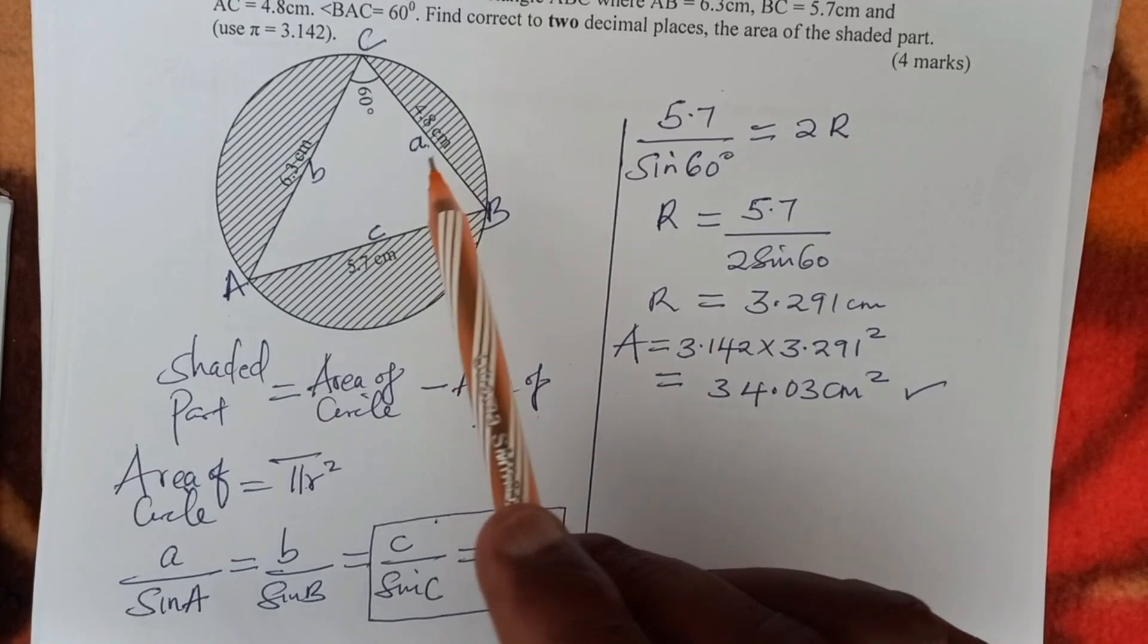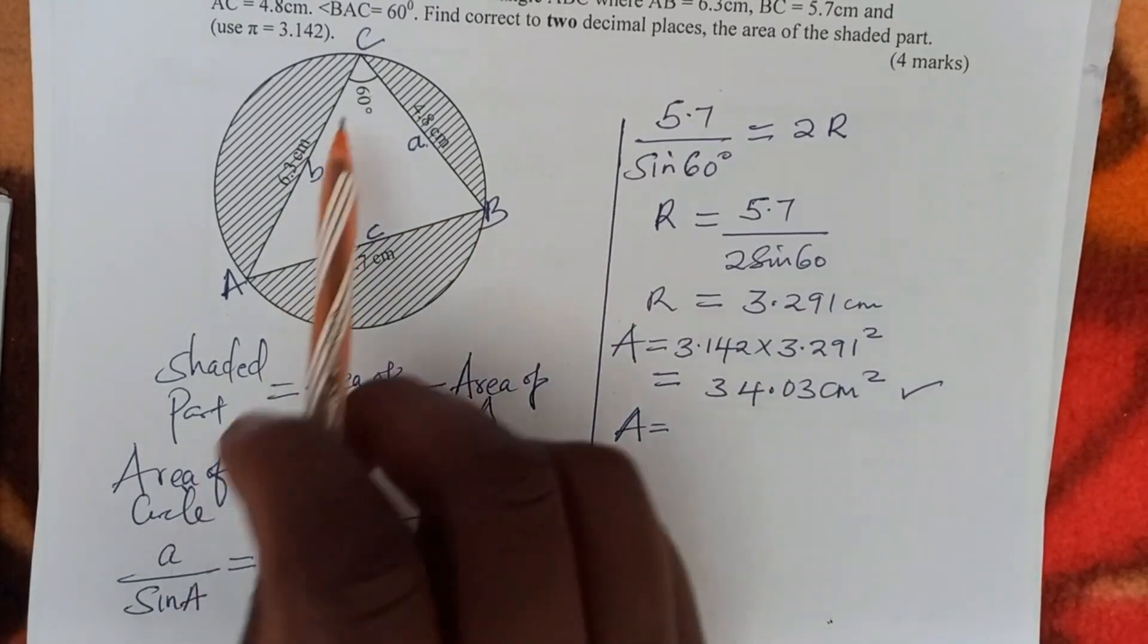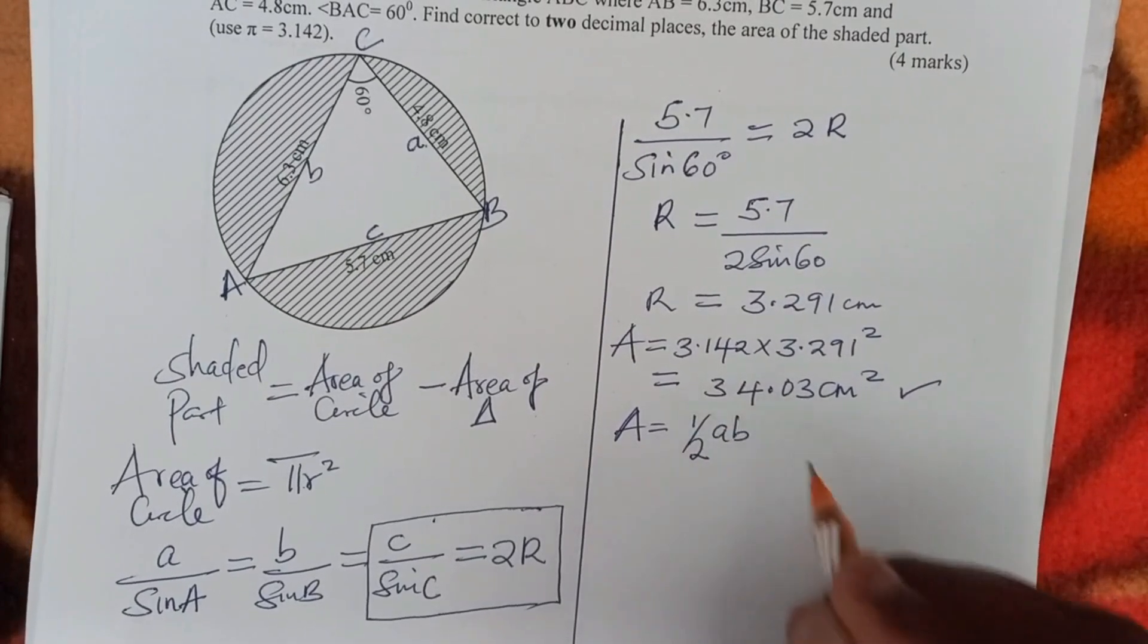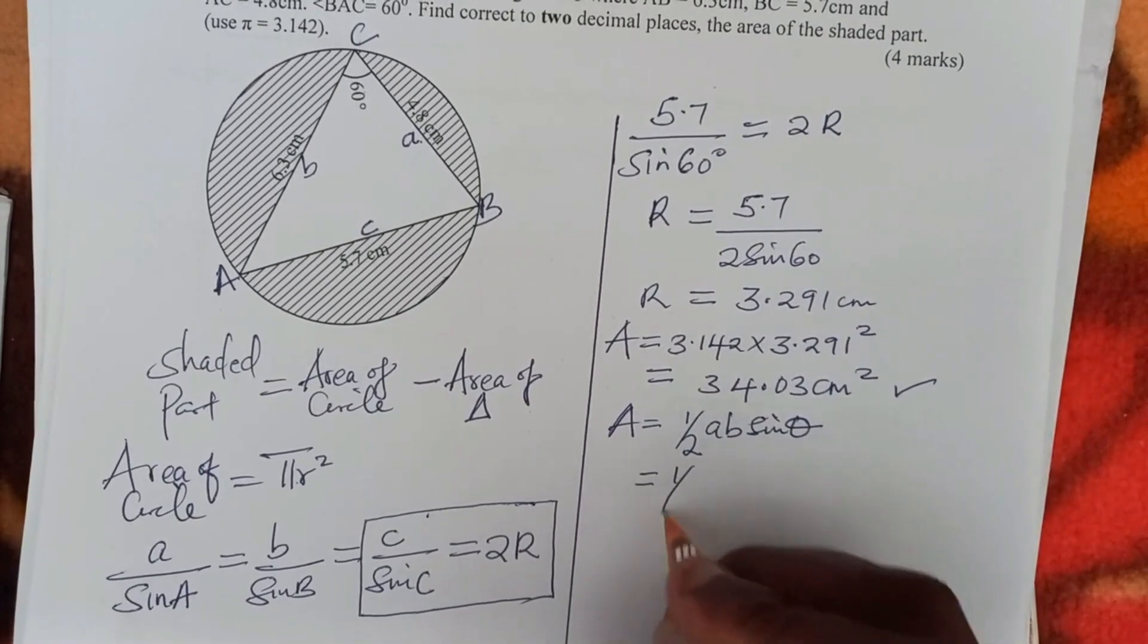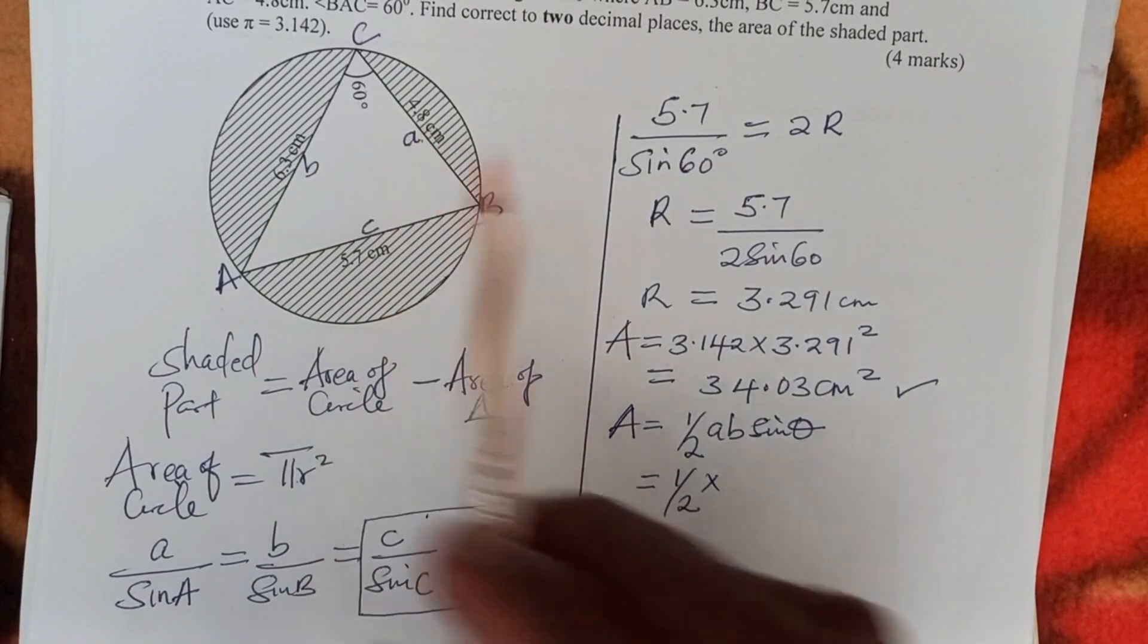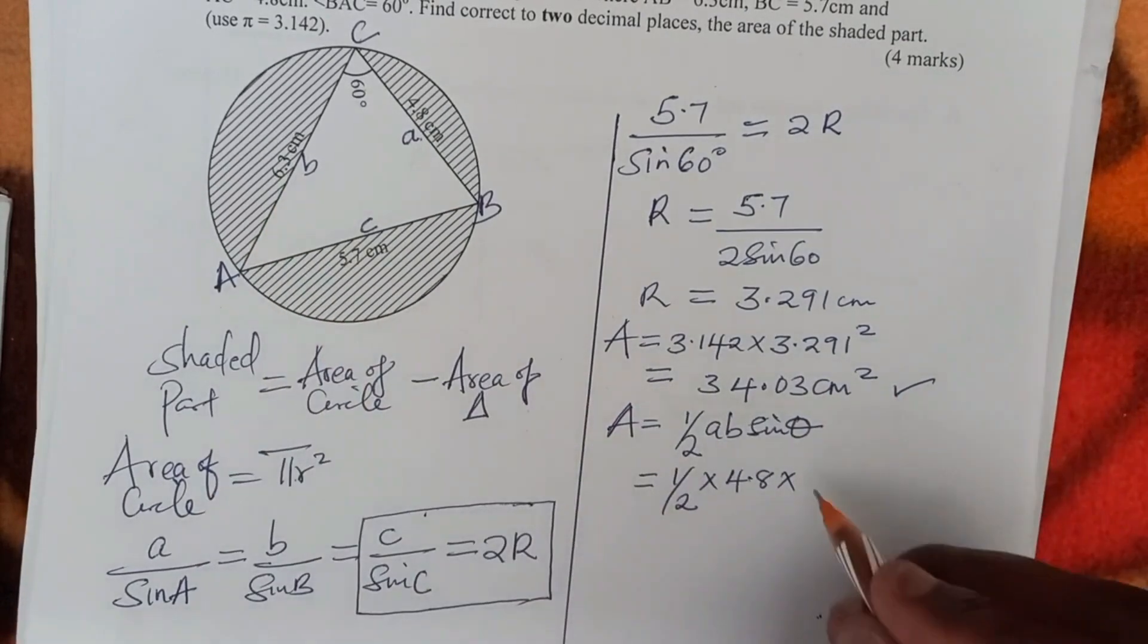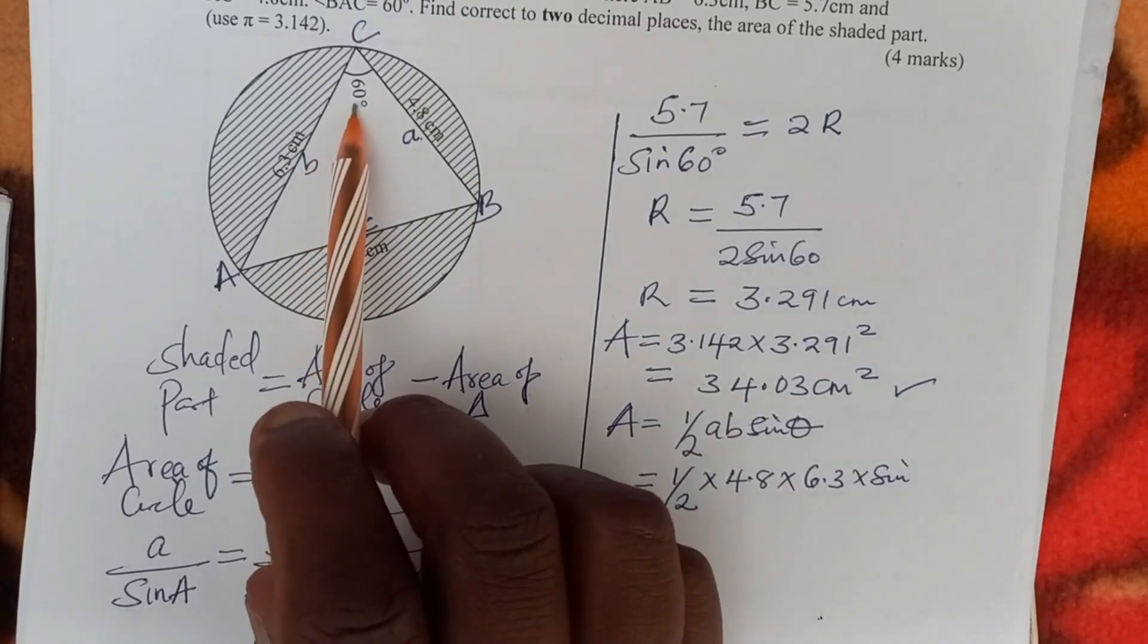So the best formula to use is a half. So area of this triangle ABC will be given by half AB sine theta. So in this case, we have half times, we have A is 4.8, 4.8. Then B is 6.3. Then times sine of theta, this angle 60.